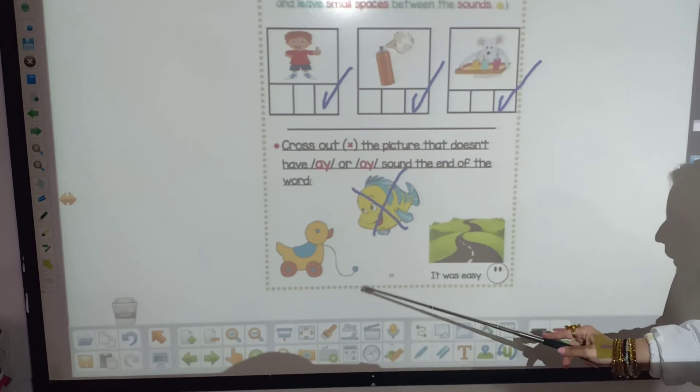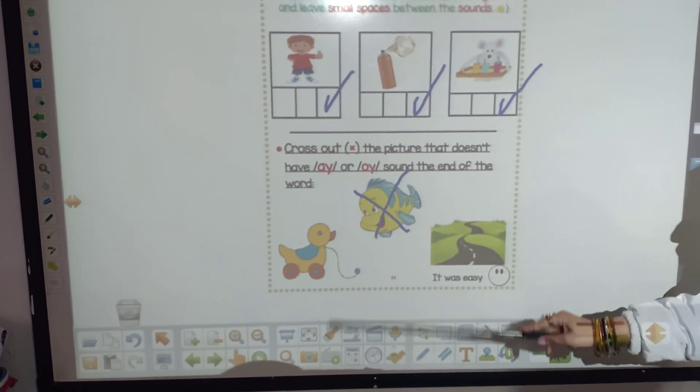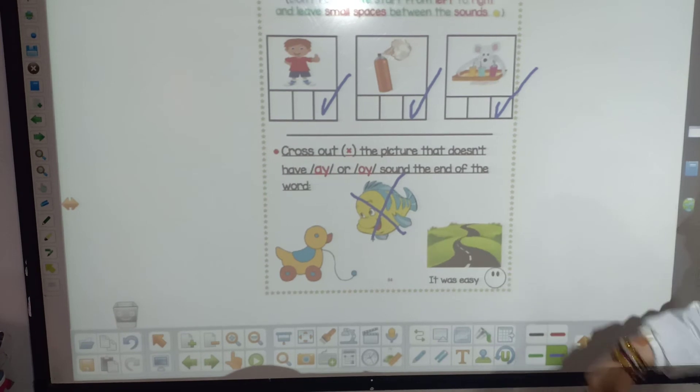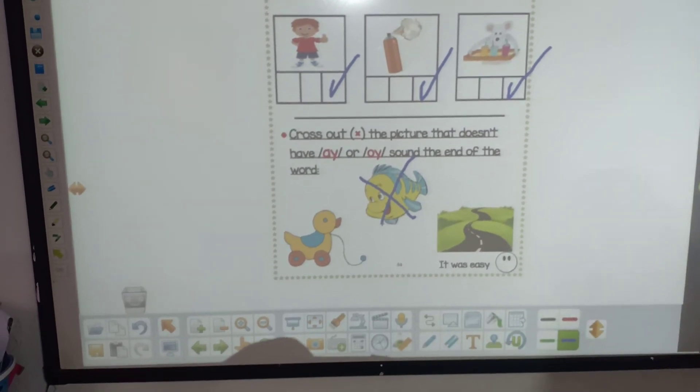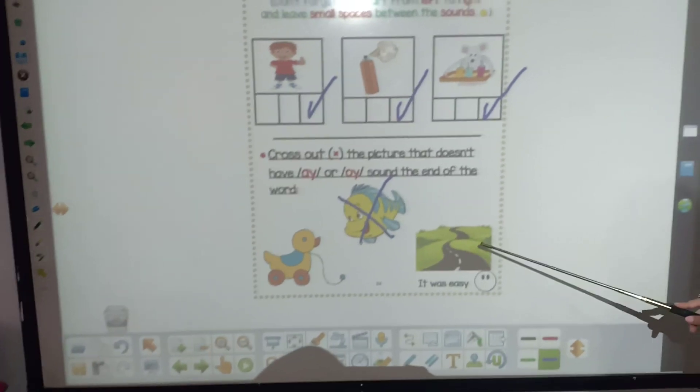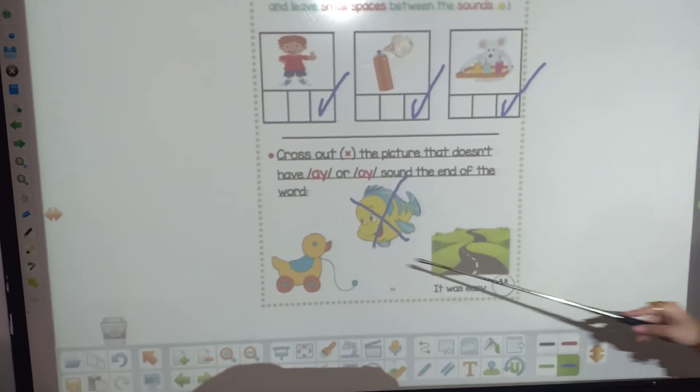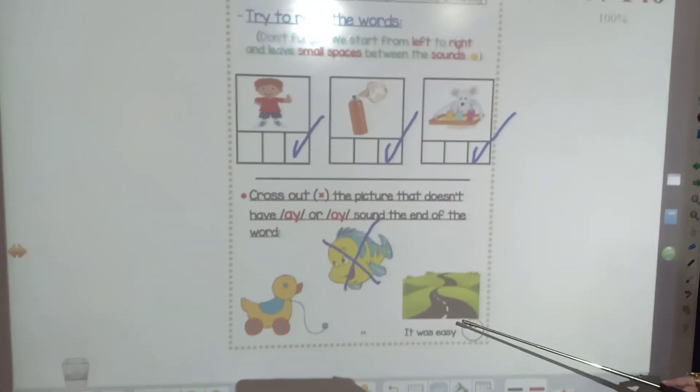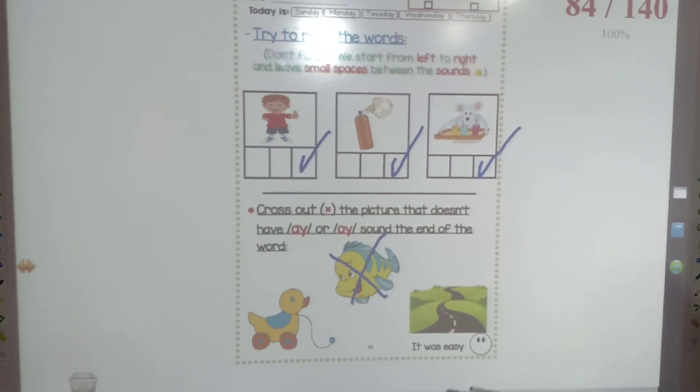The next one is toy. T, oy. Toy has oy at the end. So, leave it. Don't cross it out. The next one, way. Way has ay at the end. So, leave it and don't cross it out.